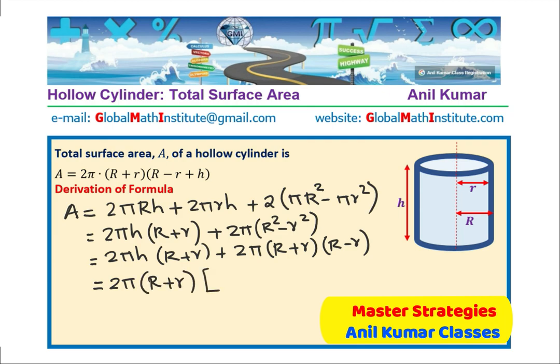And we are left with h plus (R - r). Let us rearrange, so we get 2π(capital R + small r) times (capital R - r + h). So that becomes the formula for total surface area for a hollow cylinder. That is how we will derive this particular formula.